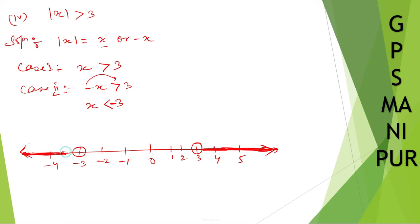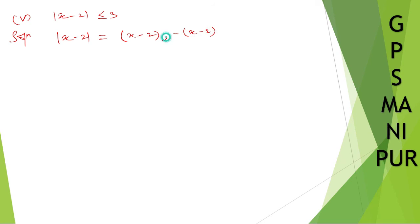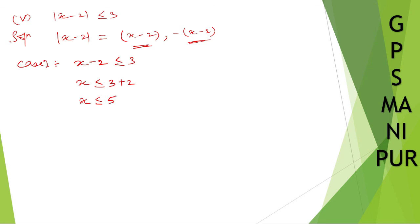I hope you can understand. Now let us do the last question, Roman number 5. The question says mod of x minus 2 is less than or equal to 3. Solution: mod of x minus 2 can be written as x minus 2 or minus of x minus 2. Case 1: x minus 2 is less than or equal to 3, so x is less than or equal to 3 plus 2, which is 5.